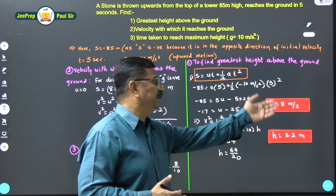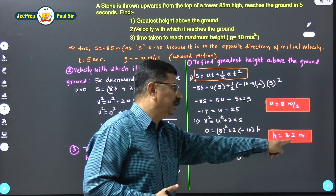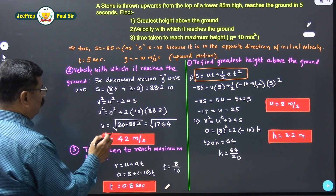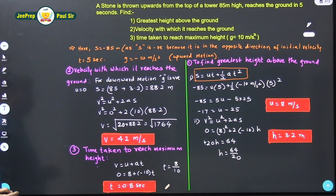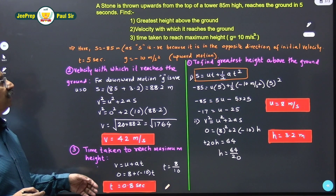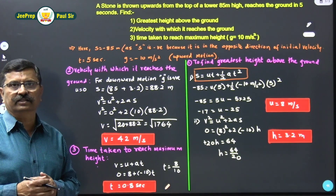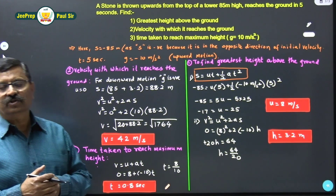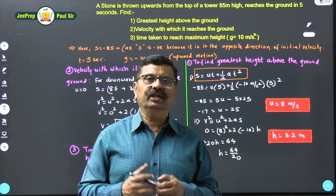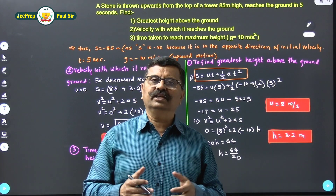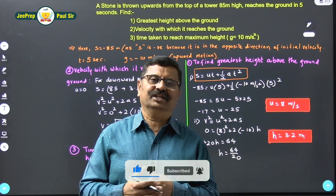Summary of answers: initial velocity is 8 m/s; the greatest height above the ground is 3.2 meters above the tower top (total 88.2 m); the velocity with which it reaches the ground is 42 m/s; and the time taken to reach the maximum height is 0.8 seconds. I hope you understood this problem. To do well in competitive examinations like JEE, CET, and NEET, I strongly recommend subscribing to our channel. Thank you.